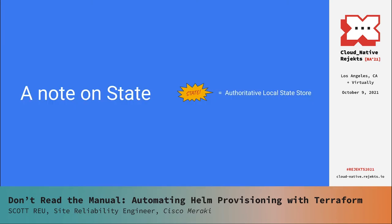Before we get started, I want to talk about state — in this case, config state. It lives in different places for each of the components we're going to discuss. As we go through this presentation, I've made a little callout that says 'state' — whenever I want to indicate that something we're looking at is the authoritative local state store for config in a particular context. I'll call it out, and I just wanted to make sure you were aware that's going to come up.